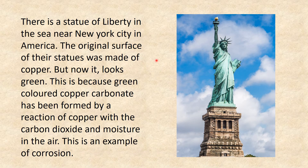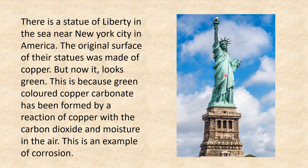We all know about the Statue of Liberty, located in the sea near New York City in America. The original surface of the statue was made of copper, but now it looks green. This is because green-colored copper carbonate has been formed by the reaction of copper with carbon dioxide and moisture in the air — this is an example of corrosion.